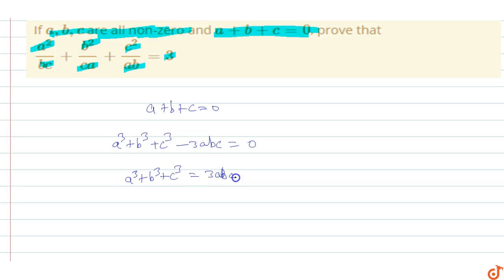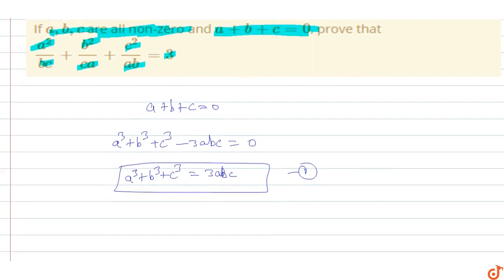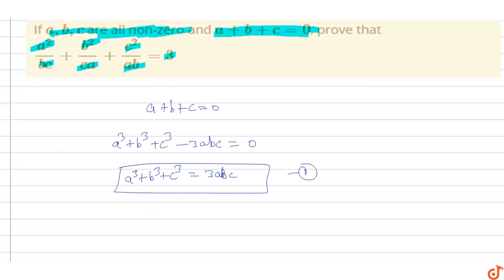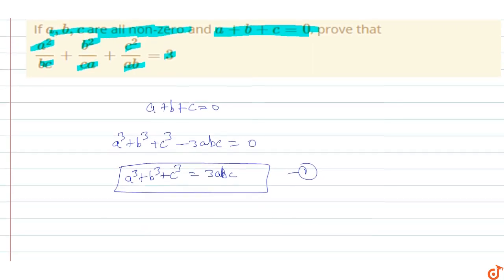This is equation first. Next, we will prove that a square by bc plus b square upon ca plus c square upon ab equals to three.